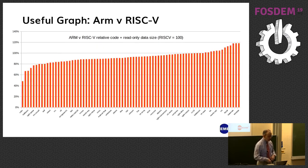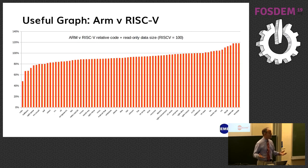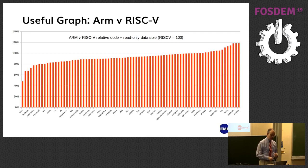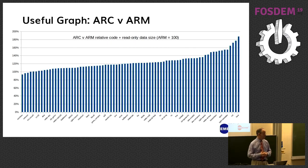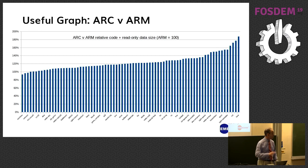We can do the same for ARM. Variation is less there, but I'd still like to know why there are some programs where RISC-V is 18% better, and why cubic is 50% better. And of course we can compare ARC against ARM — so we've got a three-way comparison here.